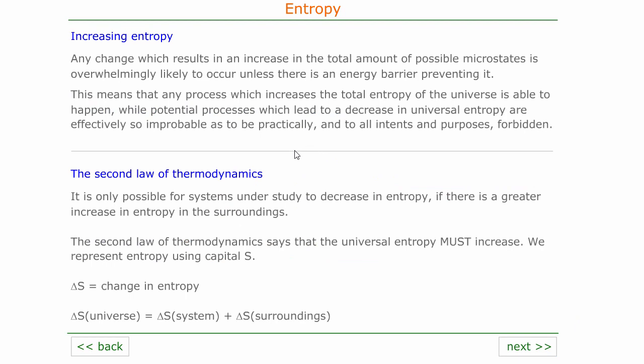This gives us a summary of what's going on effectively. To increase the entropy of any system we need to either increase the number of particles, or we need to increase the amount of available kinetic or heat energy. Any situation which allows this to happen for the universe is so incredibly likely to occur that it does — with one small proviso: there must not be some kind of energy barrier to the process happening, which we call kinetic control.